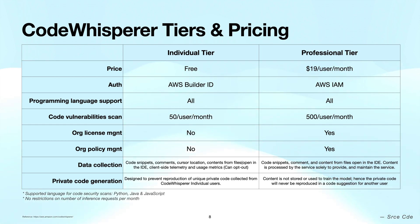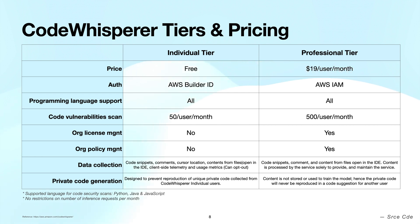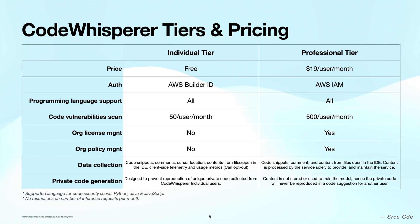Organizational license management and organizational policy management are only supported by the Professional tier. Under data collection, the Individual tier collects code snippets, comments, cursor location, contents from files open in the IDE, client-side telemetry, and usage metrics. Under the Individual tier you get an option to opt out of this data collection.